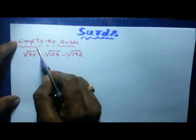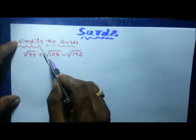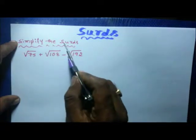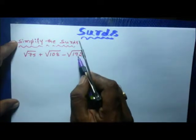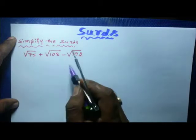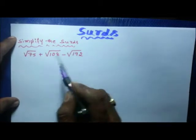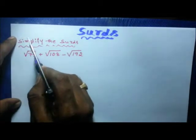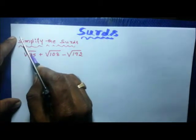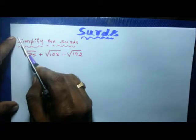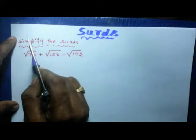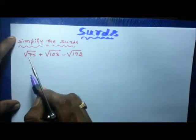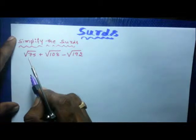Here is one problem: simplify the surds — square root of 75 plus square root of 108 minus square root of 192. First, simplify these surds to their simplest form. That is called reduction of surds.